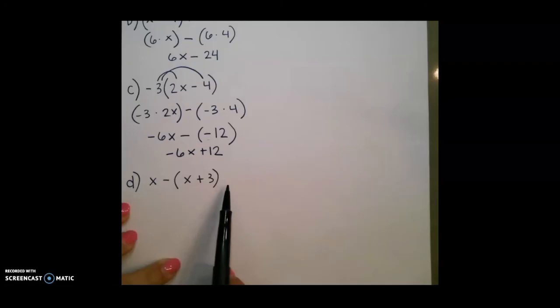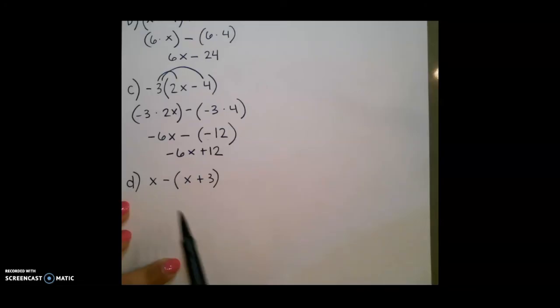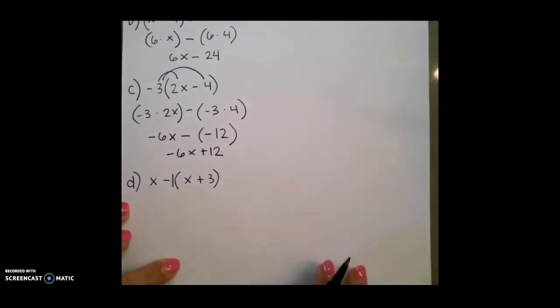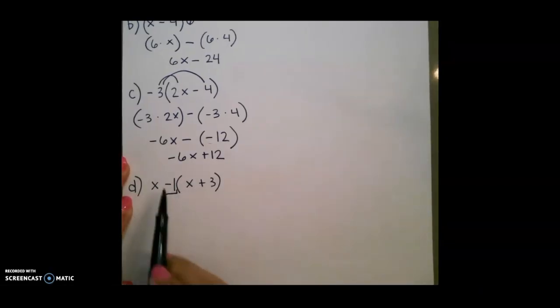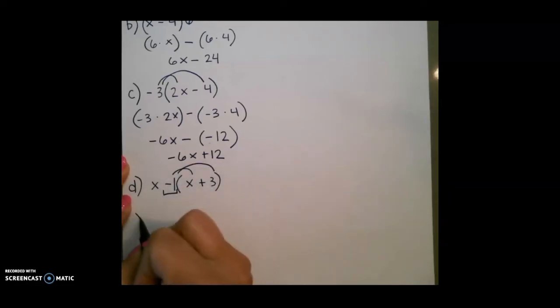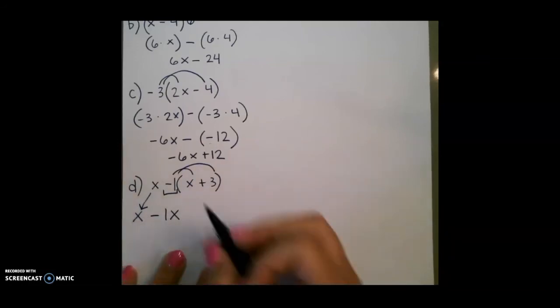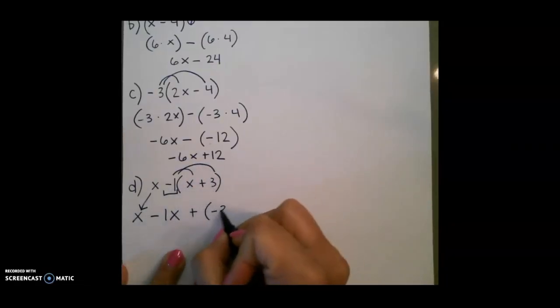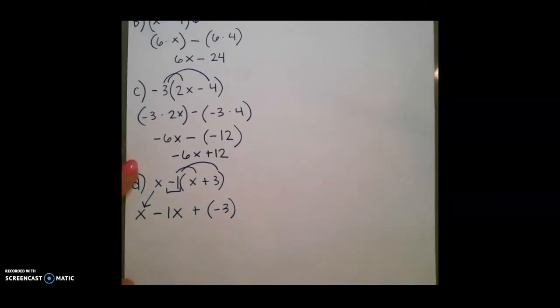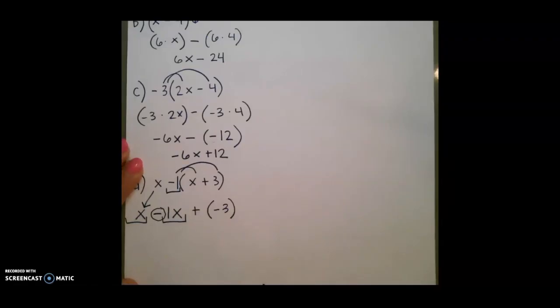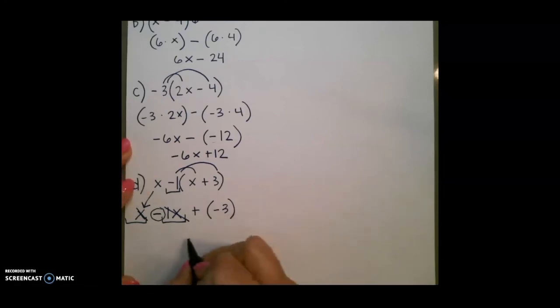Our last example is a little bit different. We have x minus parentheses x plus 3. Whenever you don't have a number or variable, you can imagine that there is a 1 there. So this is like distributing negative 1 to everything inside the parentheses. This x gets brought down — we don't use it yet. Negative 1 times x is going to be negative x. And then negative 1 times 3 is negative 3. Here, you can combine like terms. So x and negative x we can combine — that's going to be x minus x, which creates a zero pair, so these cancel out. Now we just have negative 3 left over, so our final answer here would just be negative 3.